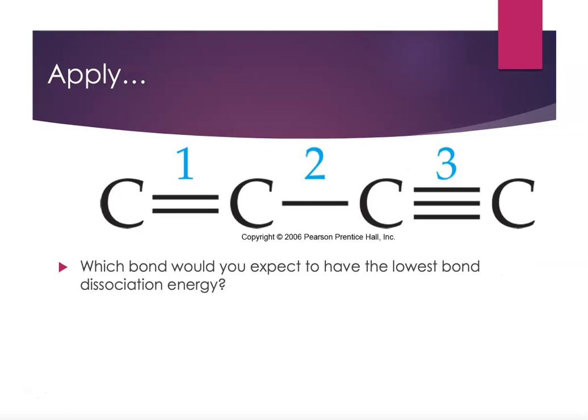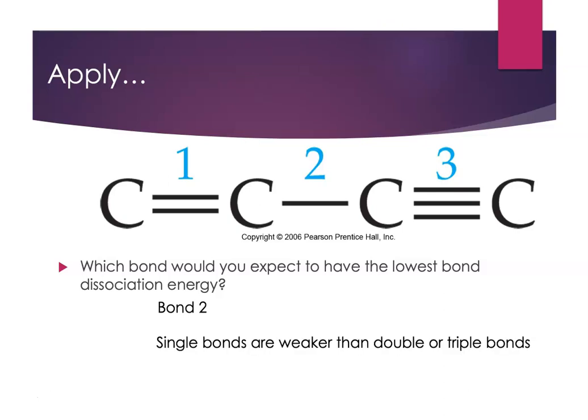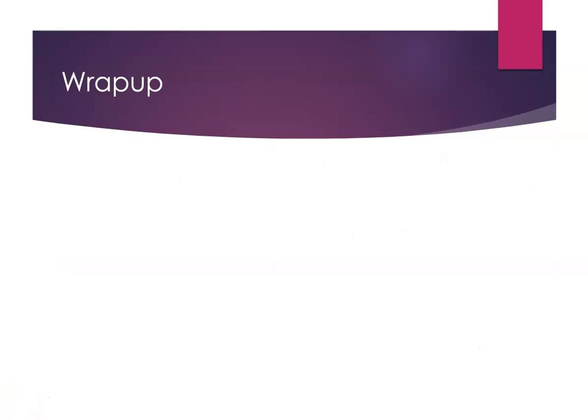Which of these three bonds would you expect to have the lowest bond dissociation energy? We know that when the bond order is low, the bond dissociation energy is low, and higher bond order means higher bond energy. Since bond 2 is a single bond and the other bonds are multiple bonds, bond 2 would have the lowest bond dissociation energy, because single bonds are weaker than double or triple bonds.